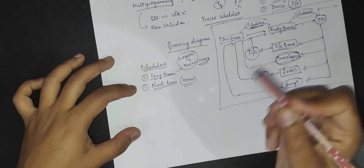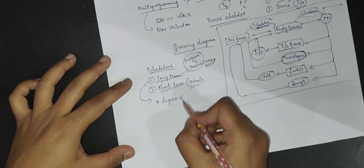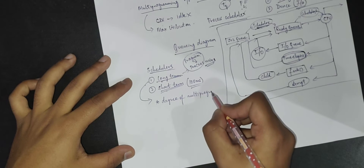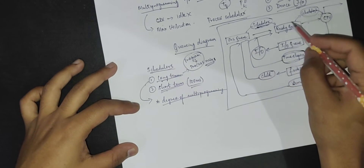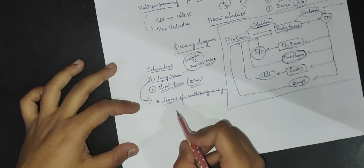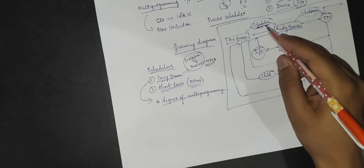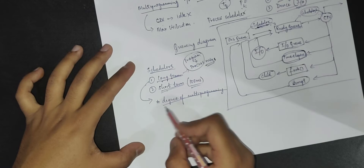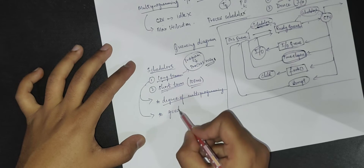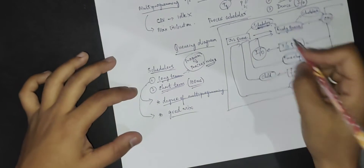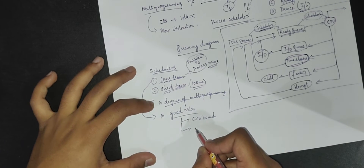The long-term scheduler should actually be a very good scheduler, because it is going to determine your degree of multiprogramming. The degree of multiprogramming tells you how many processes will be present in your ready queue — this is decided by the long-term scheduler. Apart from this, the long-term scheduler should also make sure it picks up a good mix of processes. We basically have two types: one is your CPU-bound process and the other is your IO-bound process.